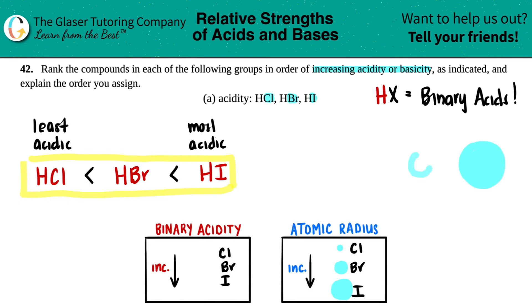Then comes bromine, then comes chlorine. So this would be HCl, this is HBr, and this is HI. Now just to indicate the H on there, I'm just going to put a small dot because hydrogens are very, very small.